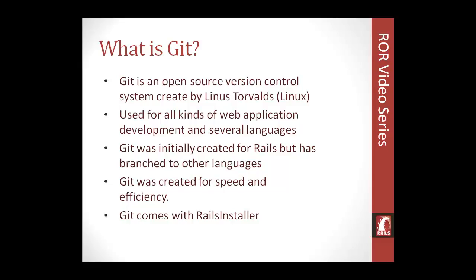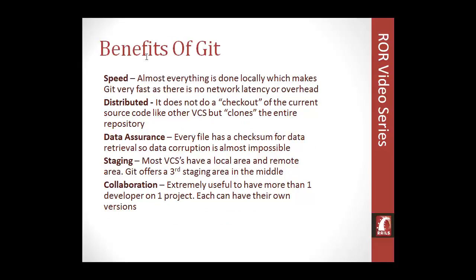I'd definitely suggest reading more about Git because it's really handy and something you'll always use once you start. Git was created for speed and efficiency — everything's local which makes it much faster than a standard VCS. It comes with the Rails installer, which we already installed a couple sections ago, so you already have it on your machine if you've been following along. Because it's all local, there's no network latency or overhead, no uploading or downloading except when you push and pull.